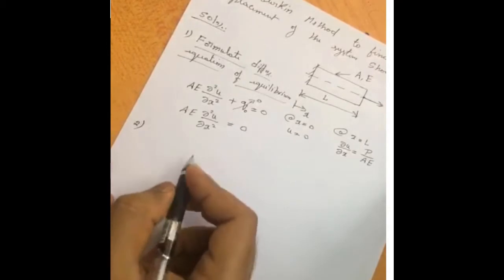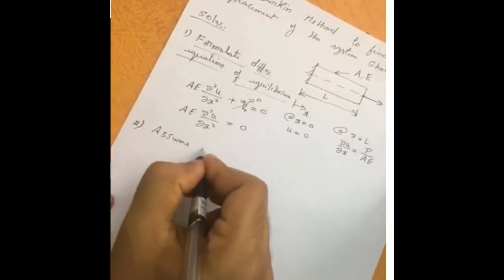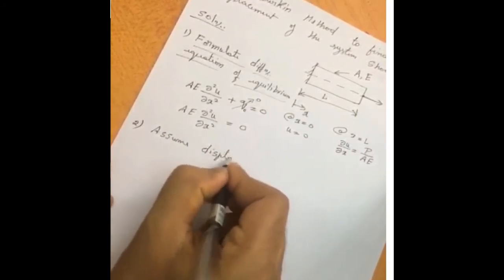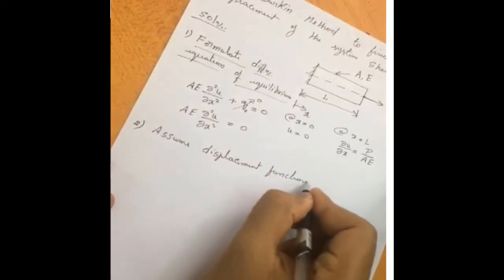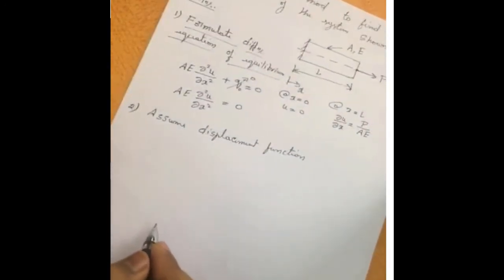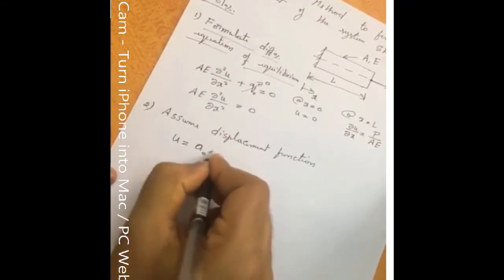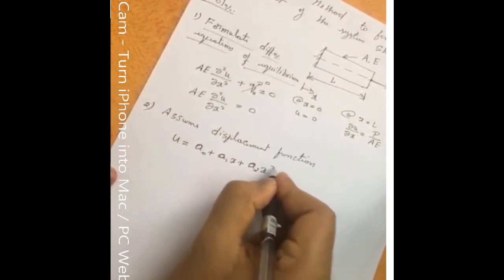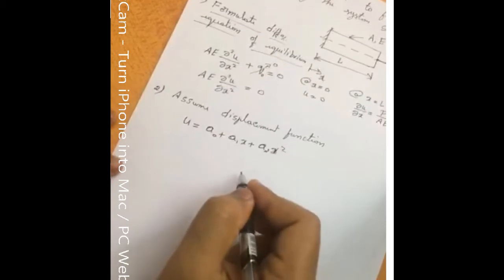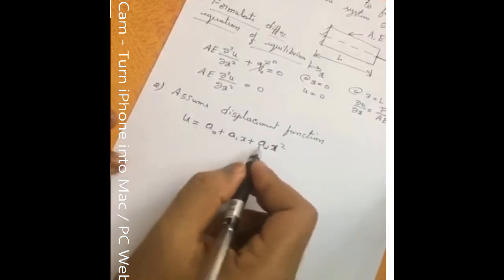The second step is to assume a polynomial displacement function. It may be any polynomial or trigonometric. Here, let us assume a polynomial: u is equal to A₀ plus A₁x plus A₂x². Here, A₀, A₁, A₂ are generalized coordinates.